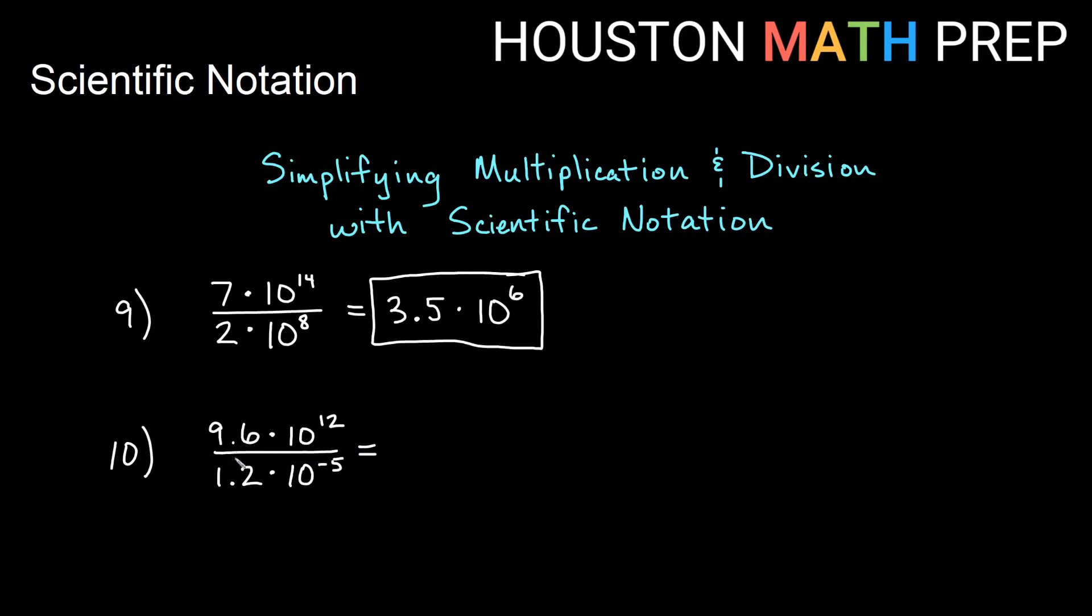Over here, think about doing the division separately. We have 9.6 divided by 1.2. If you do 9.6 divided by 1.2 in your calculator, that gives you exactly 8. Then we subtract the exponents. 12 minus negative 5 is like plus 5. So this will be 8 times 10 to the 17 for this one.